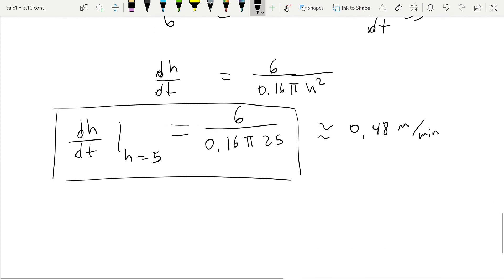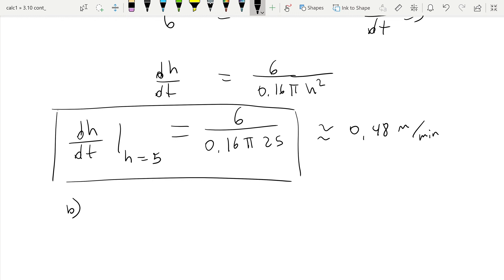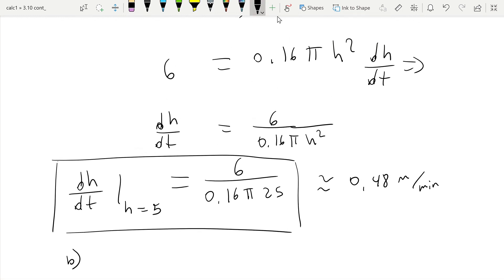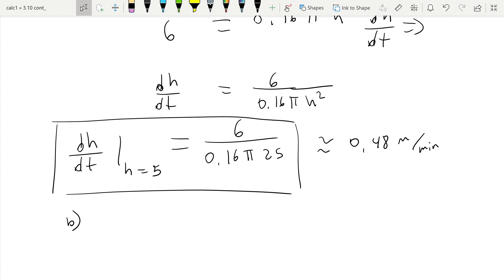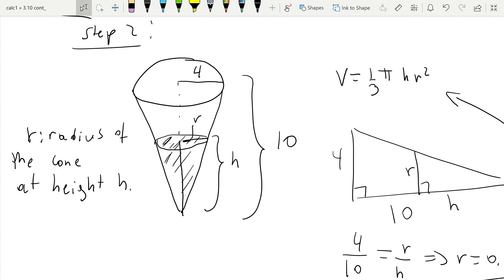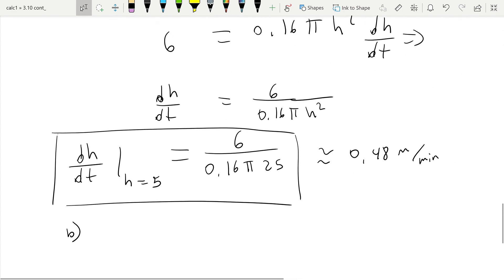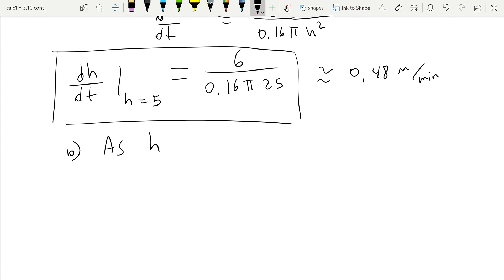To answer part B, let's notice that this formula here, dH/dt, contains a constant here times 1 over H squared. So 6 divided by 0.16 times π times 1 over H squared. That means that as H increases, this quantity here on the right gets smaller, so that the rate at which the water level is rising is decreasing. And that is actually kind of natural to think about, because it takes more water to fill the next one meter, because the base is getting wider as H increases. So the answer we're looking for here is that as H increases, the water level rises more slowly.